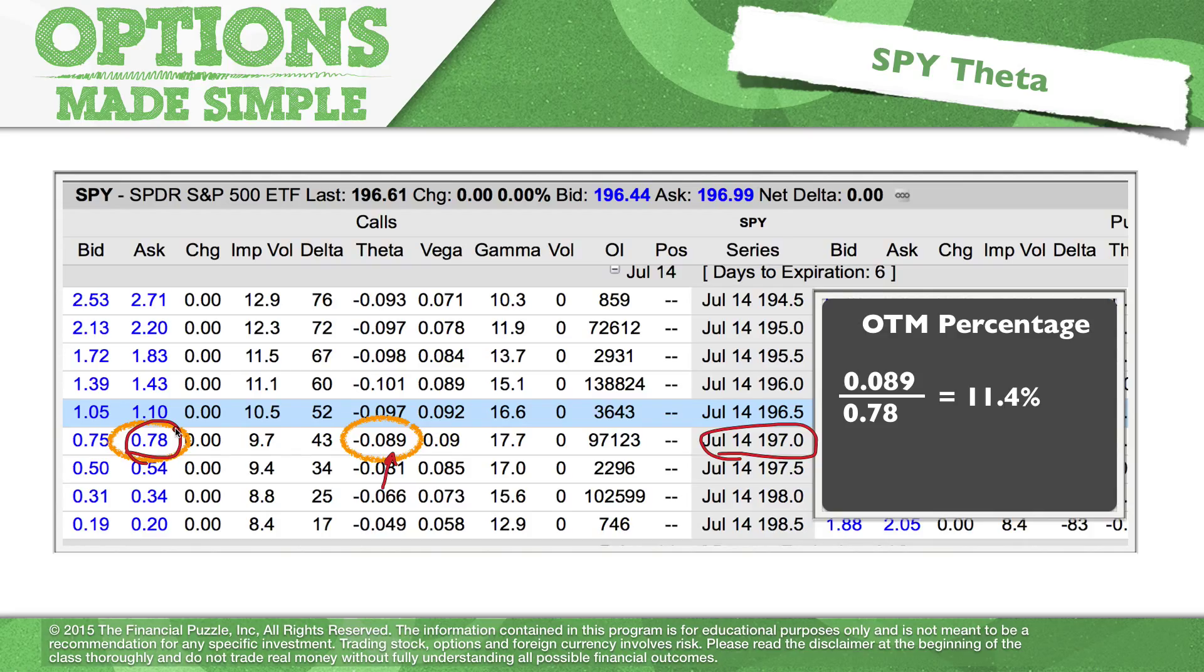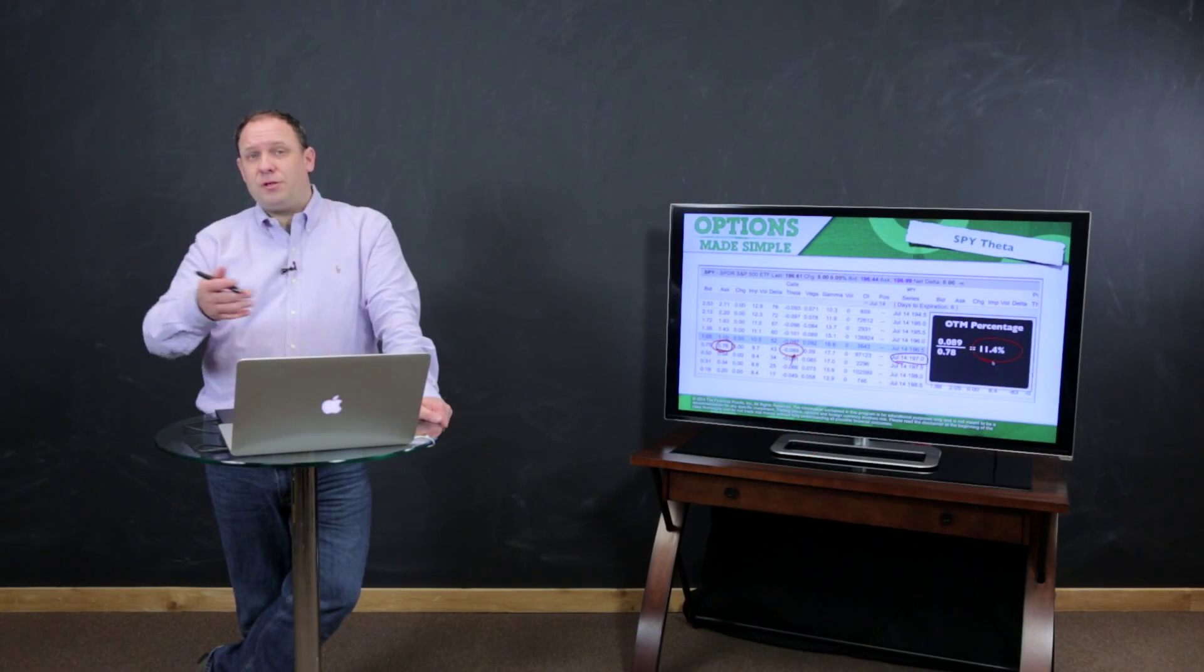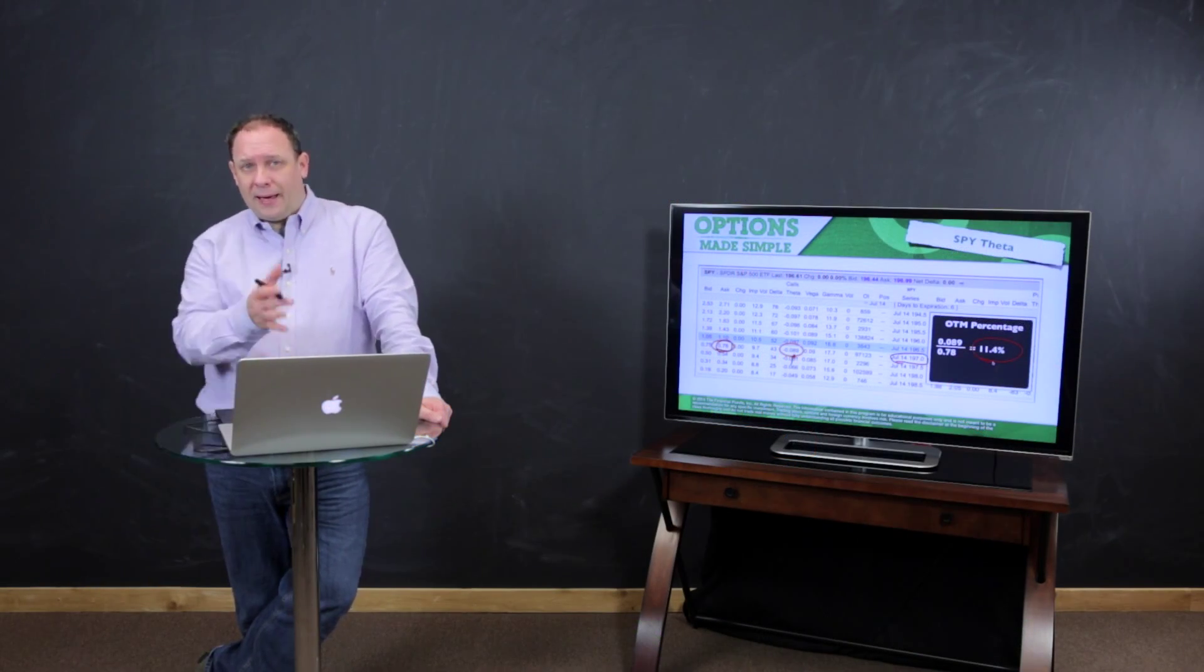Well, 8.9 against 78 cents is actually 11.4 percent. So for every thousand dollars you have, you're losing $110 per day on this trade. That is a large percentage.